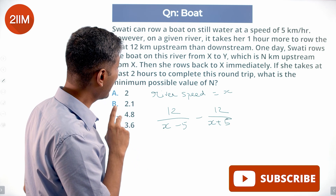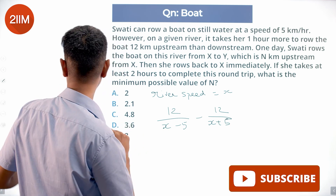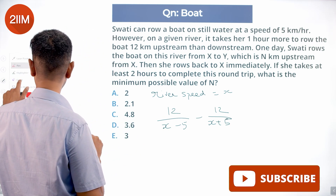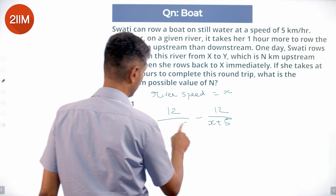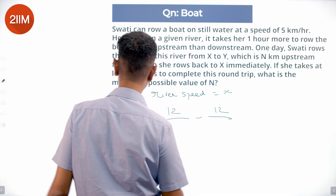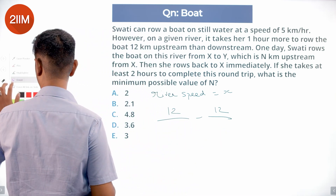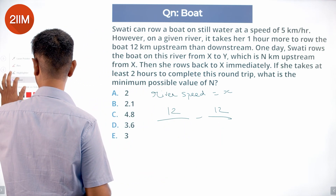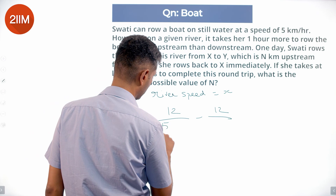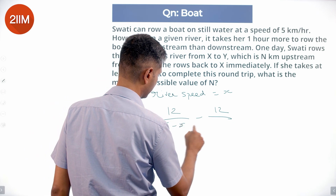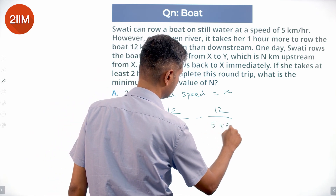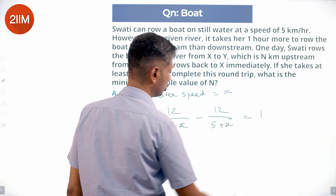Now, the rowing speed in still water is 5. I need to make an adjustment — it is not X minus 5 and X plus 5. It is 5 plus X and 5 minus X. So the equation becomes: 12 divided by (5 minus X) minus 12 divided by (5 plus X) equals 1.